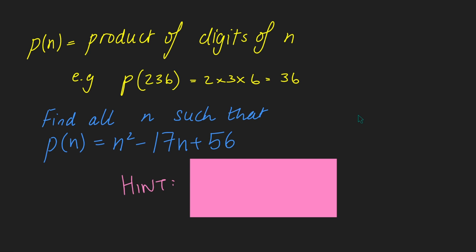Hi, thanks for joining me today. I've got a problem from the 2006 Australian Maths Olympiad. We're going to have p of n to be the product of the digits of n. So for example, p of 236 is 2 times 3 times 6, which is 36.